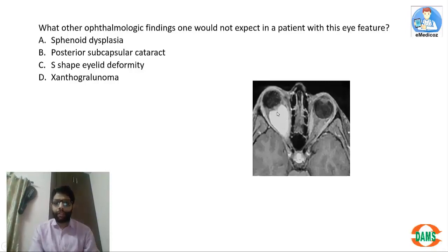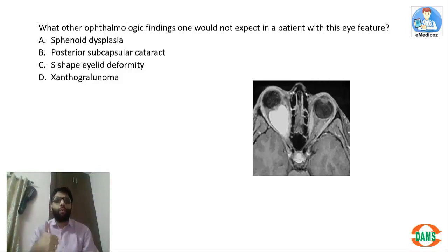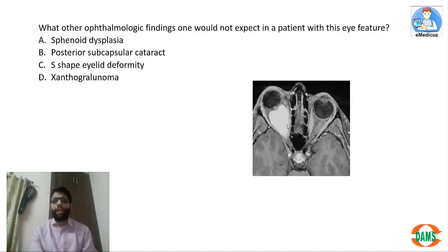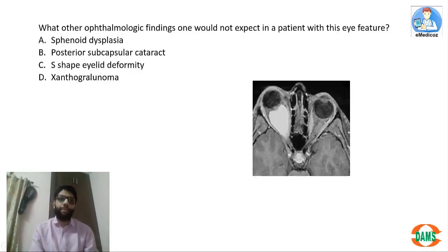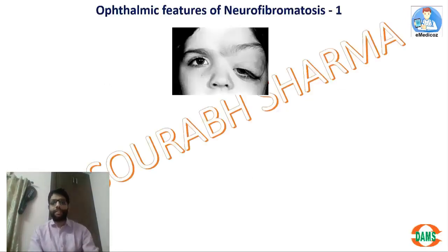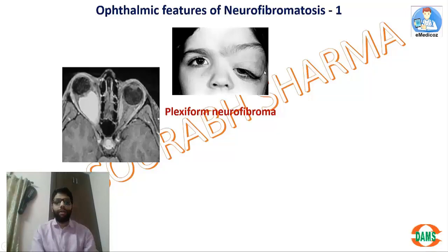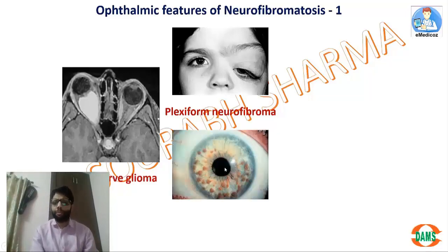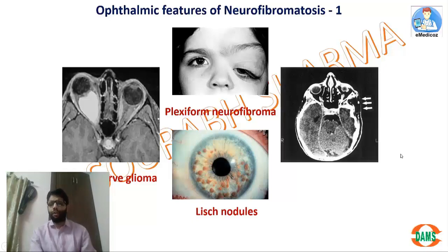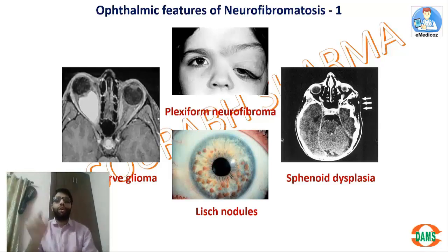The next question asks which ophthalmological finding would NOT be expected in neurofibromatosis. The image shows an optic nerve tumor with fusiform appearance — that is optic glioma. Optic glioma is a very important clinical feature of neurofibromatosis type 1. Other features include sphenodysplasia, posterior capsular cataract, and S-shaped deformity. Xanthogranuloma is not associated with NF — it is a benign iris tumor in children causing recurrent hemorrhages.